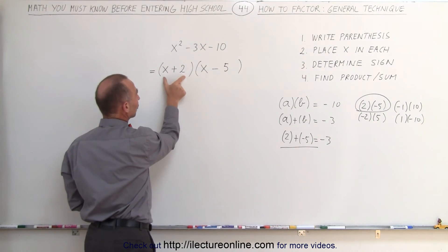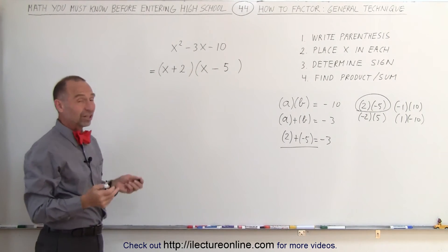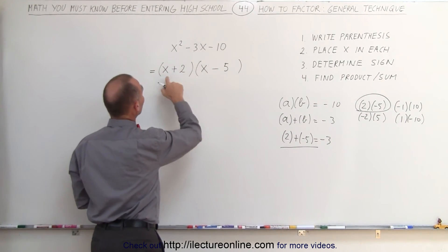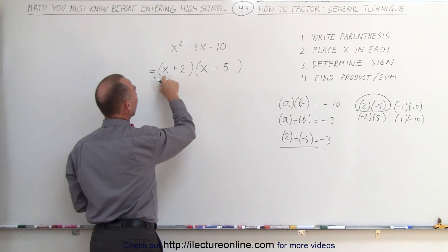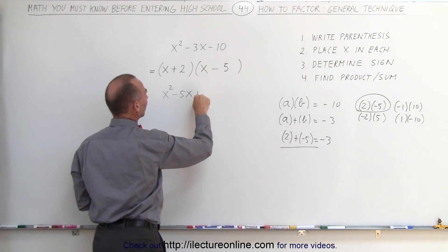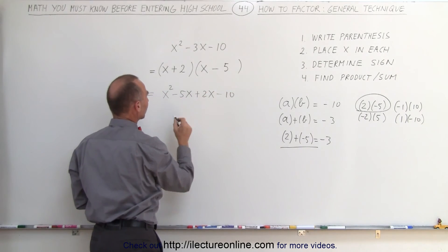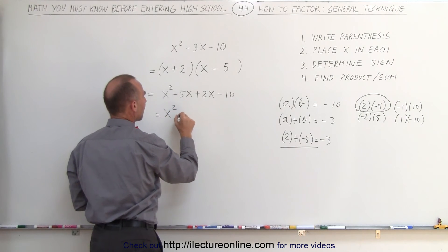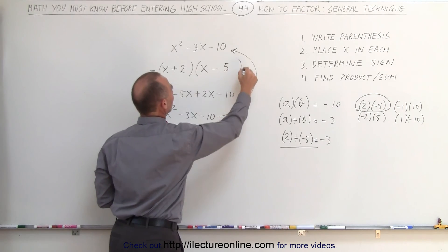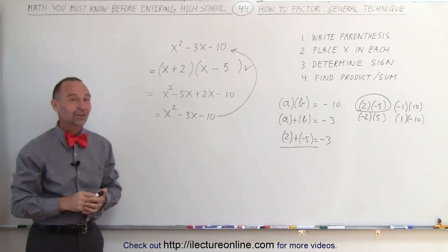It's a product of two binomials — there's a binomial, there's a binomial, and we're multiplying them together. You can always check by re-multiplying: x times x gives x-squared, x times negative 5 gives negative 5x, 2 times x gives positive 2x, and 2 times negative 5 gives negative 10. Adding the like terms together gives x-squared minus 3x minus 10, which is what we started with — confirming this is the correct factored form.